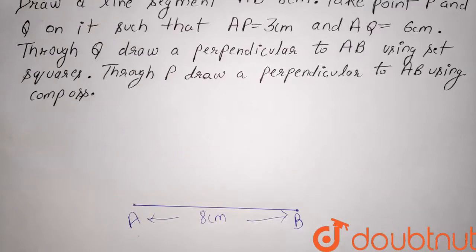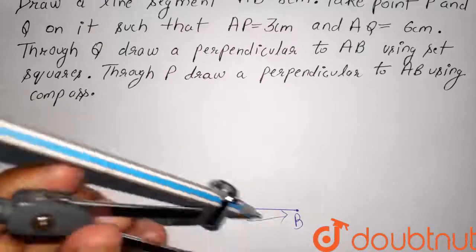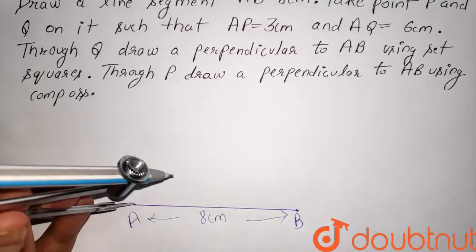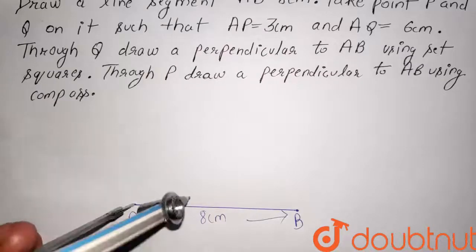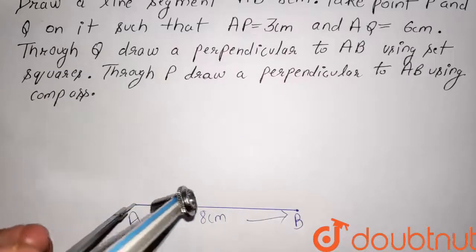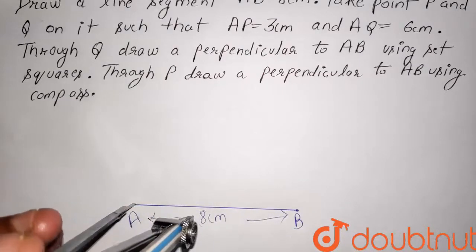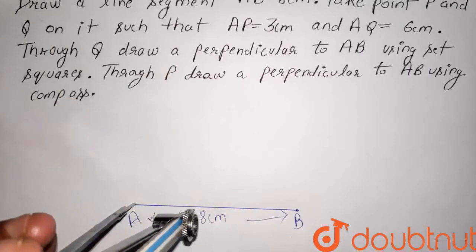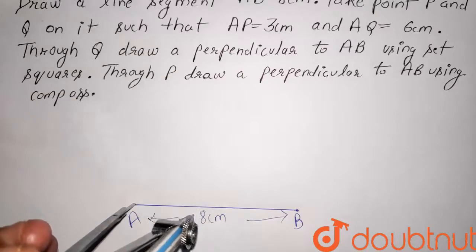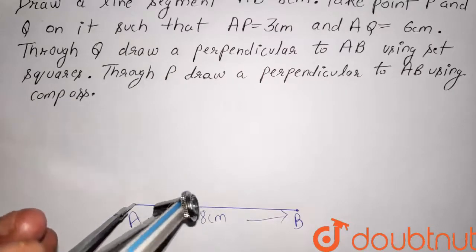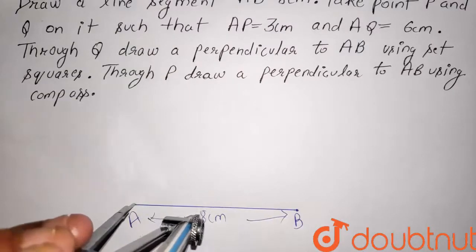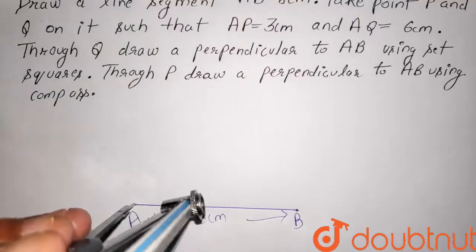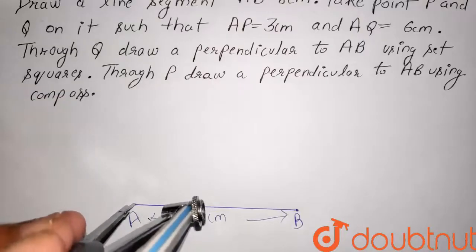Now, we have to take a point P such that AP is equal to 3 cm. That is, the length of AP is 3 cm. So, taking the measurement of the compass as 3 cm, we will cut an arc on this line.